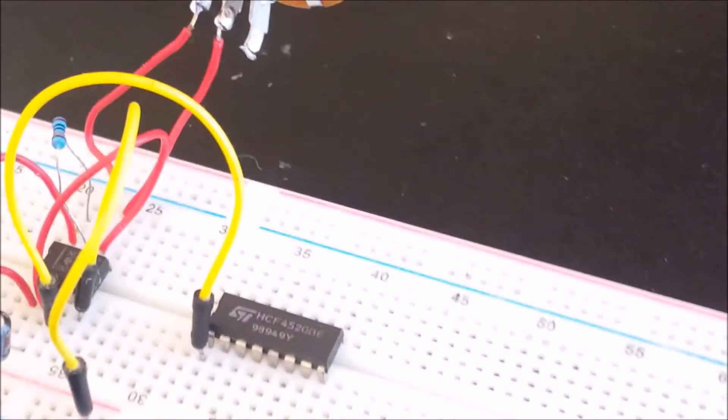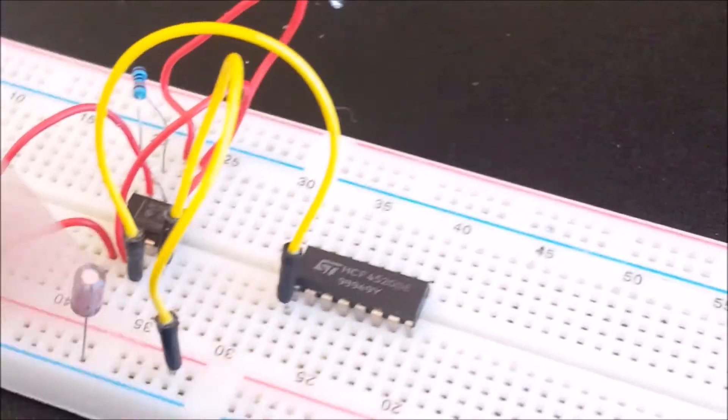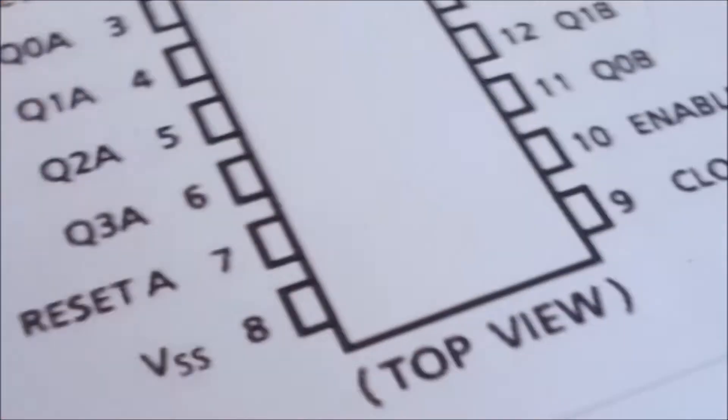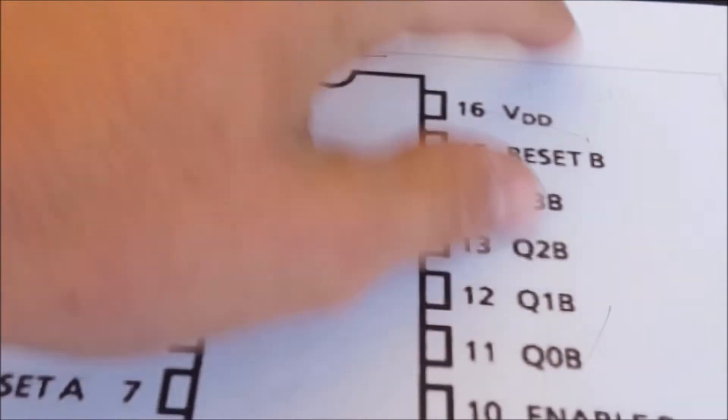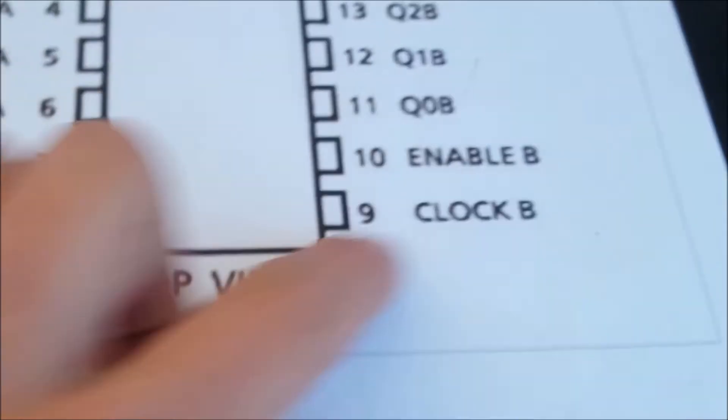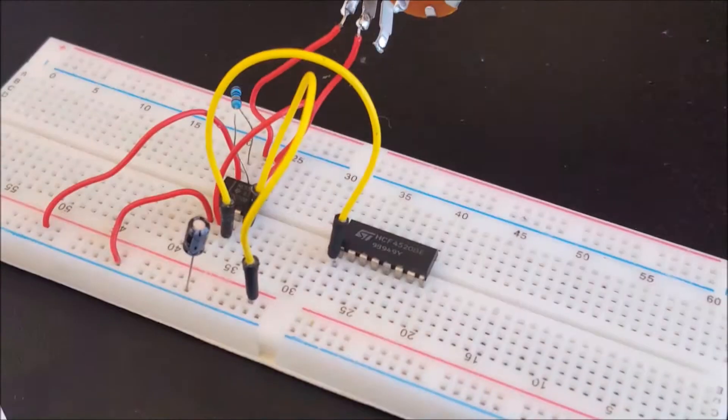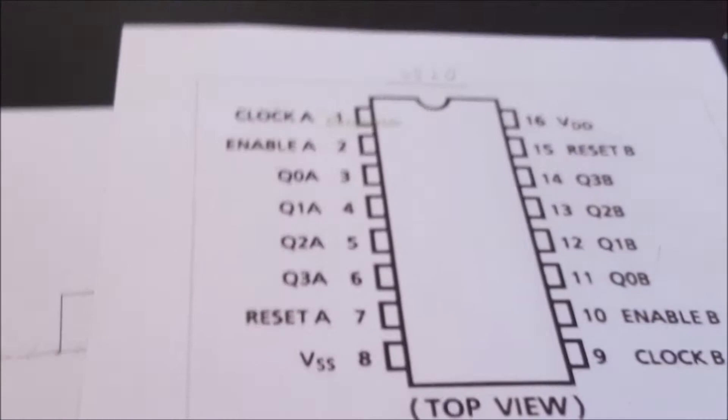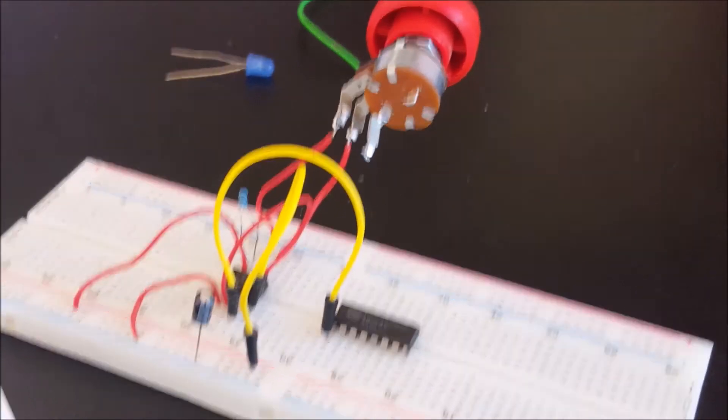Now since I'm building the 2-bit counters at the same time, I'm going to connect the clock pins with each other so that they count at the same rate. As you can see, we have the first counter and the second counter. So I'm going to connect pin 9, which is the second clock pin, to pin 1. But if you want, you could just build one counter. But I'm building 2 so that you can see the power of this IC.